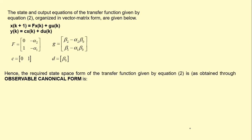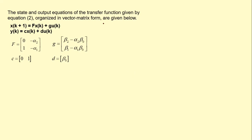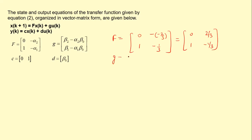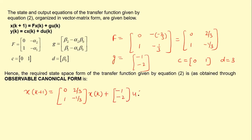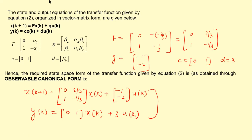Substituting the values into the observable canonical form matrices: F = [0, 1; 2/3, −1/3], G = [−1; −2], and the output equation is y(k) = C·x(k) + D·u(k) where C = [0, 1] and D = 3. This is the required state space form obtained through the observable canonical form. This is how we can solve numericals based on controllable and observable canonical forms.